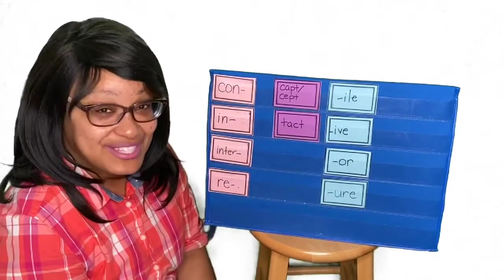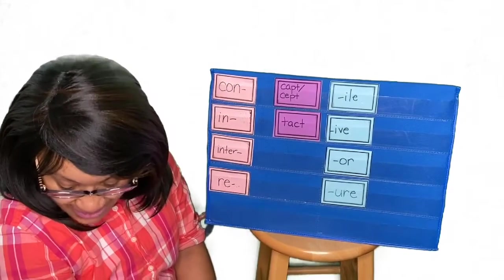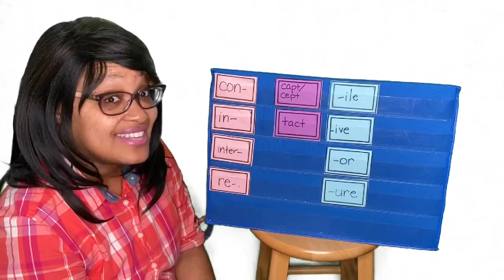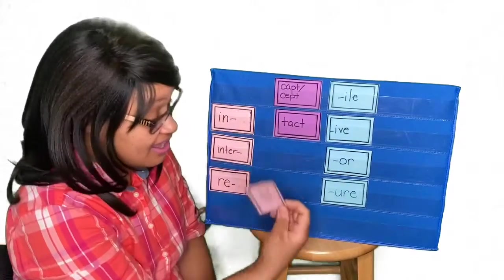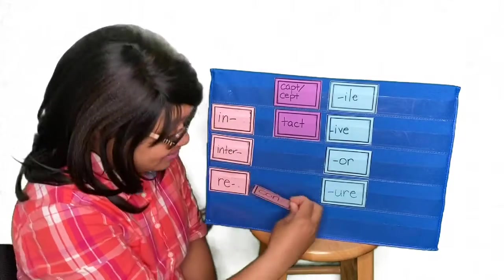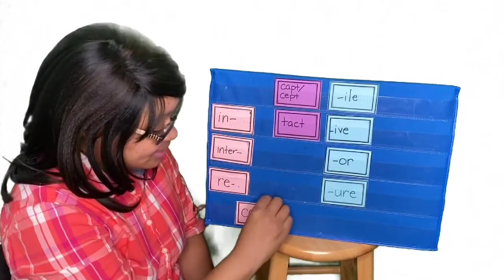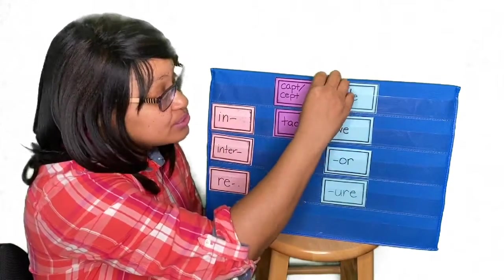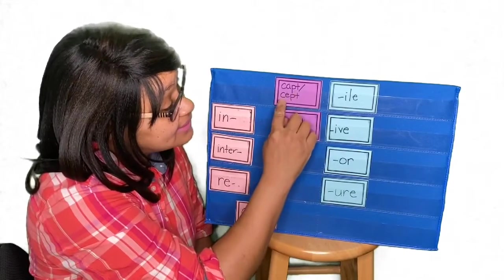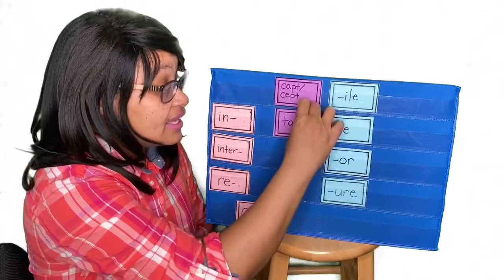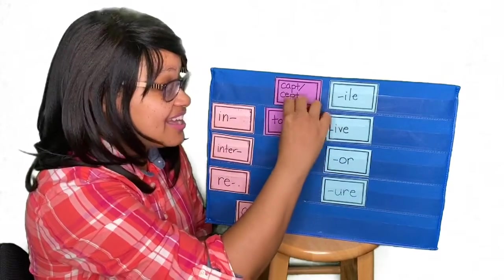Okay, it's time for us to make words. Let's make the first one. Contact. Contact. So, we have our prefix, con, which means with or together. And we're going to use our root, tact, because it can't be con, capt, con, cept. Con, tact. Contact.